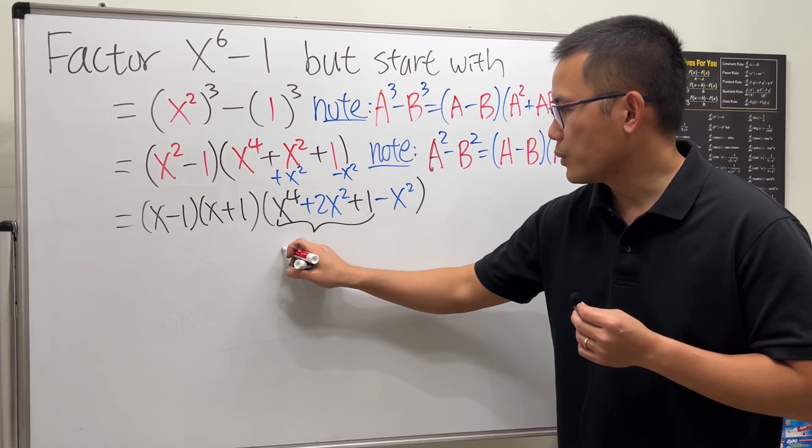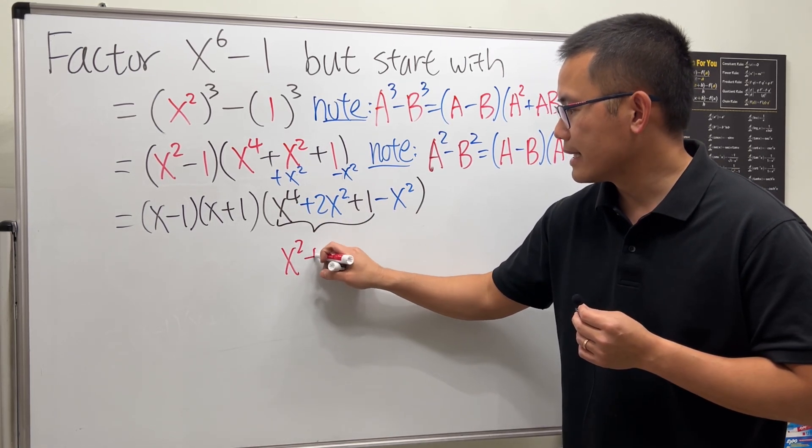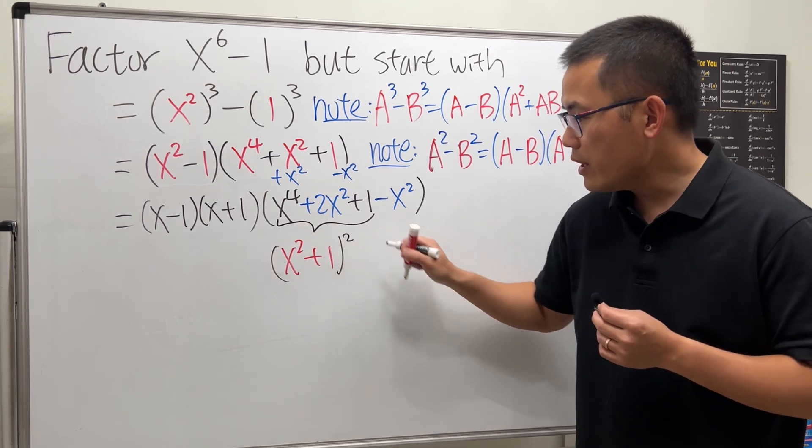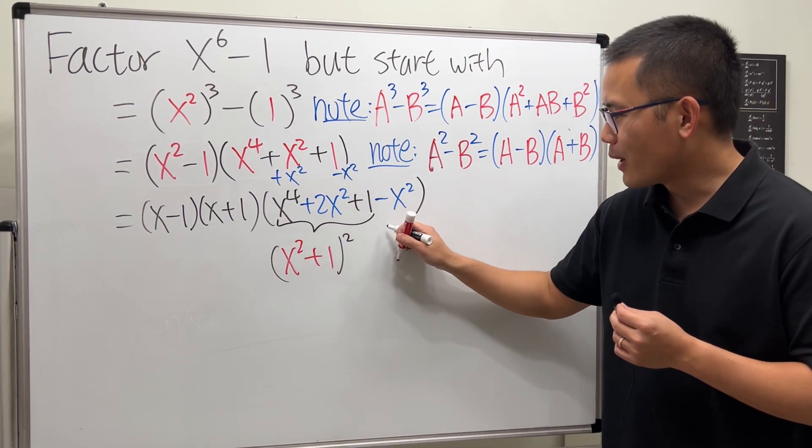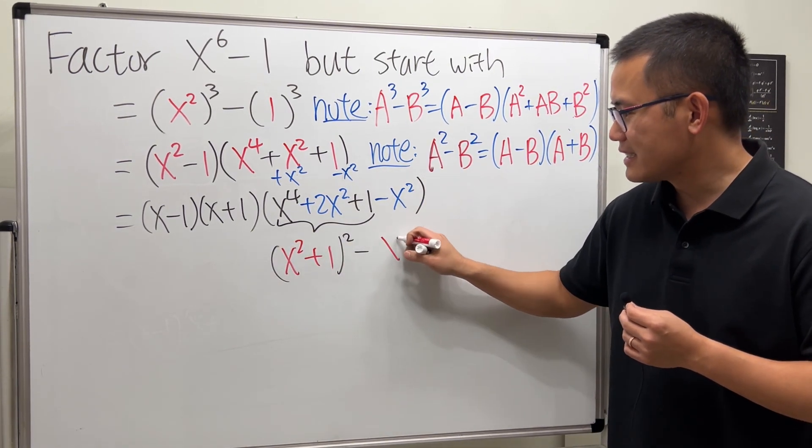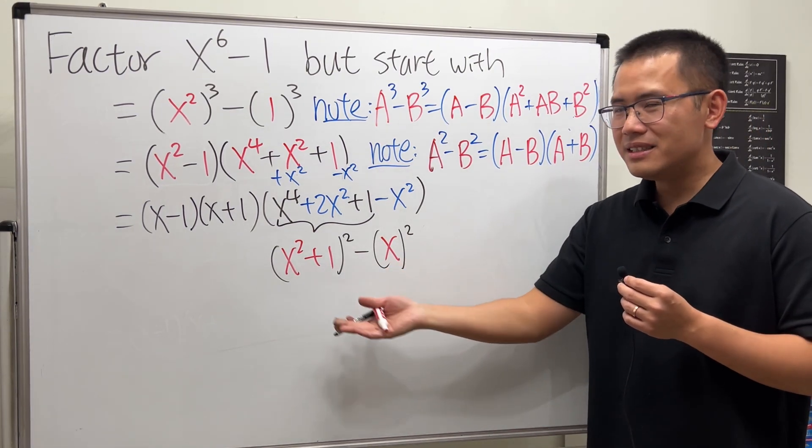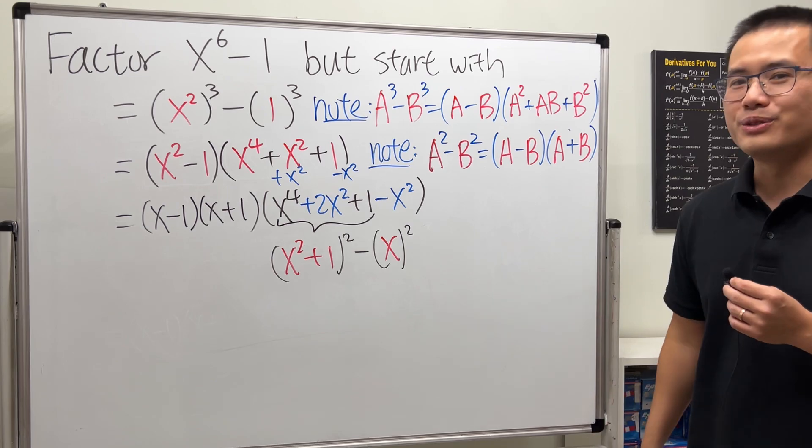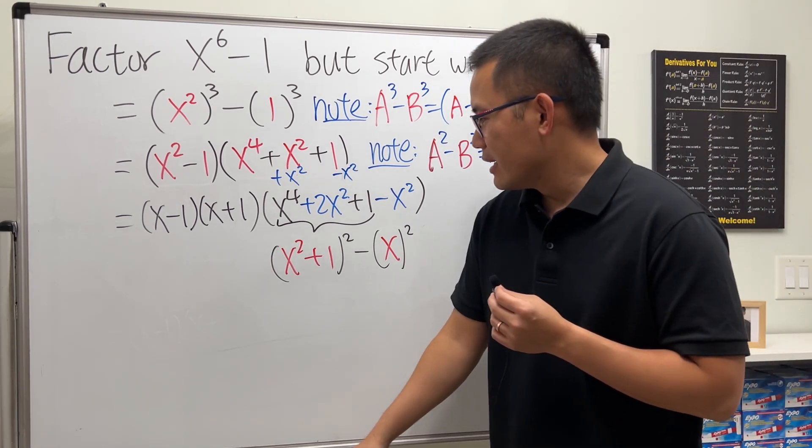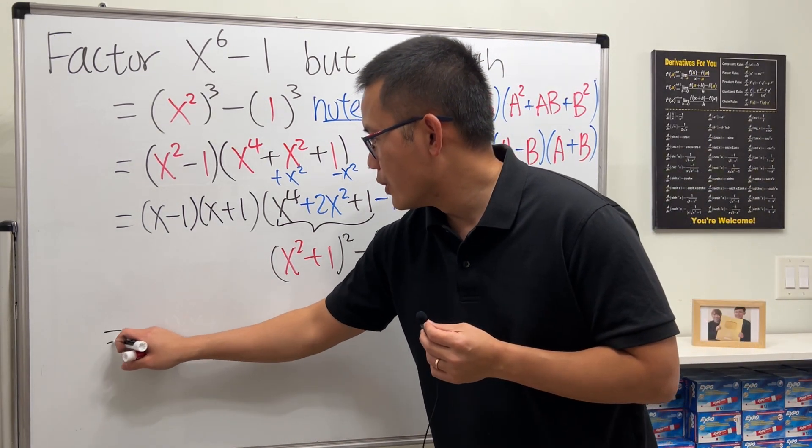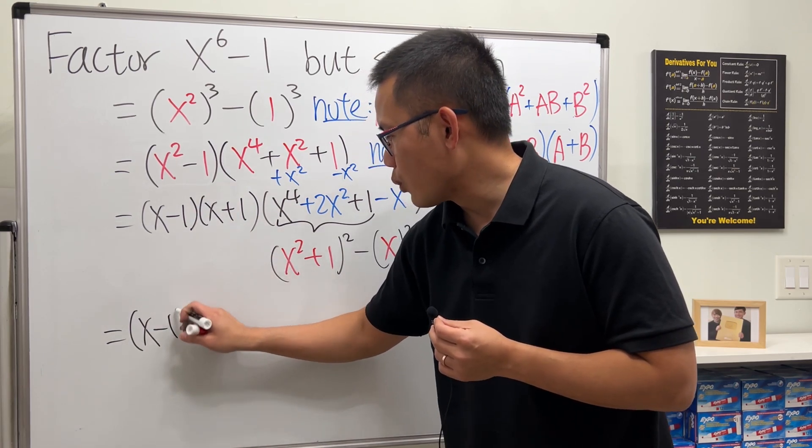So then the first three terms here, this is going to give us what we said earlier: (x² + 1)², and then for this part right here it's just minus x and then squared. Have a look, isn't this a difference of two squares situation? Yes, so we can continue.